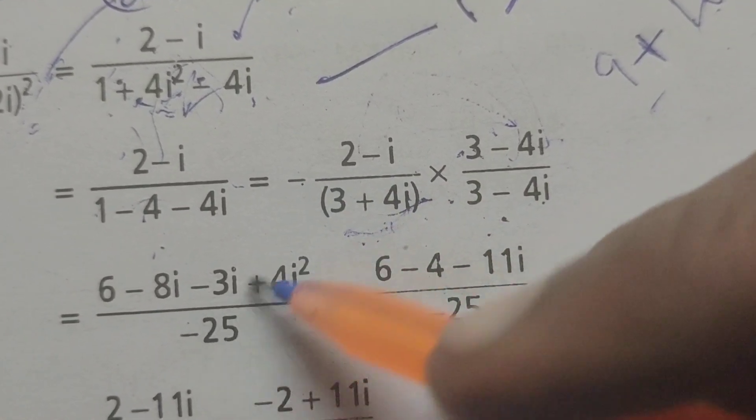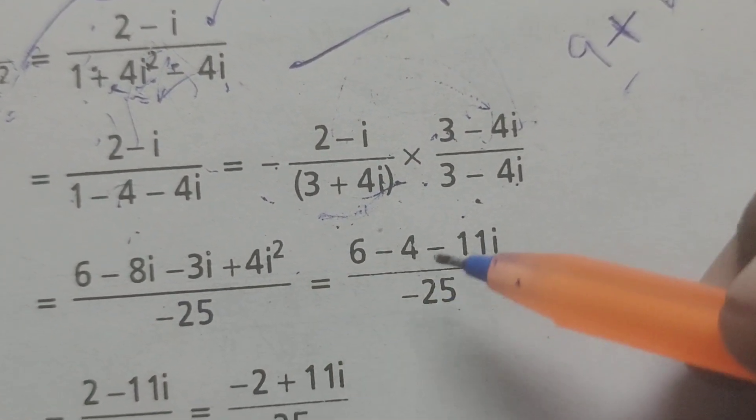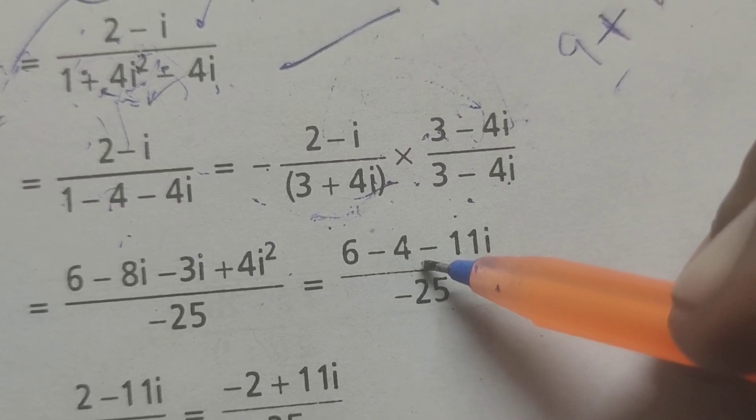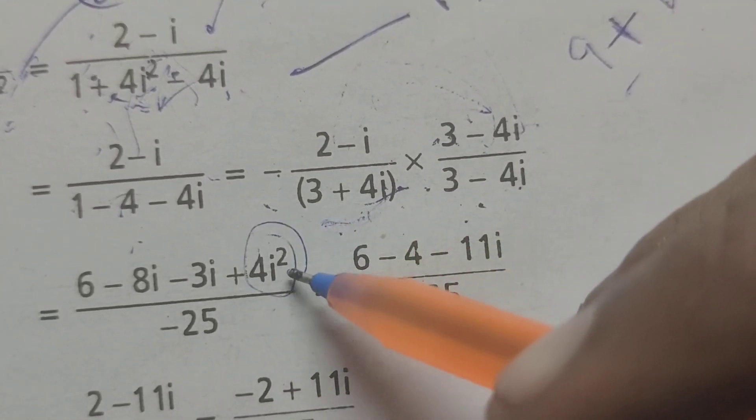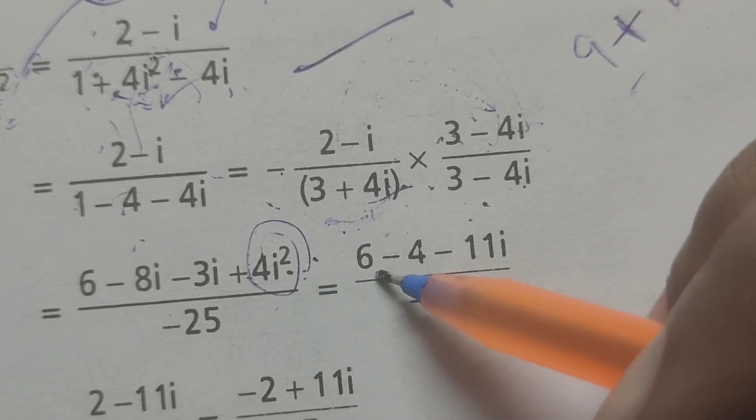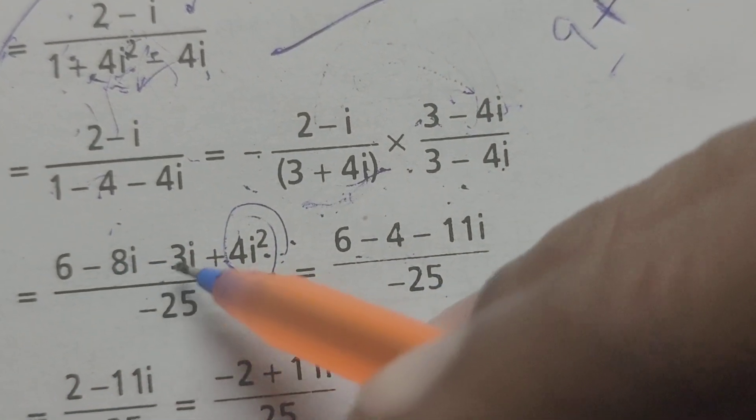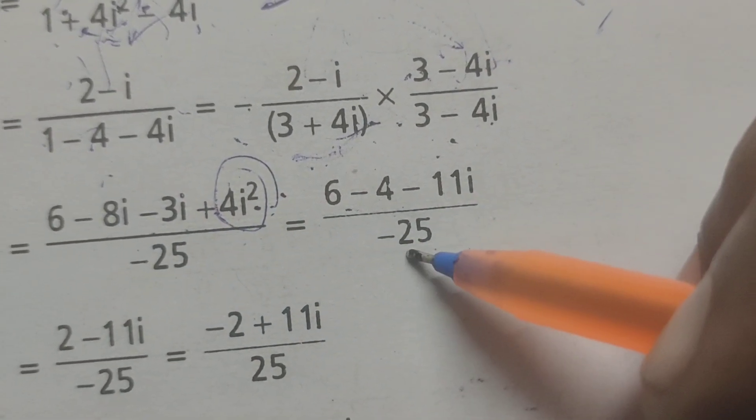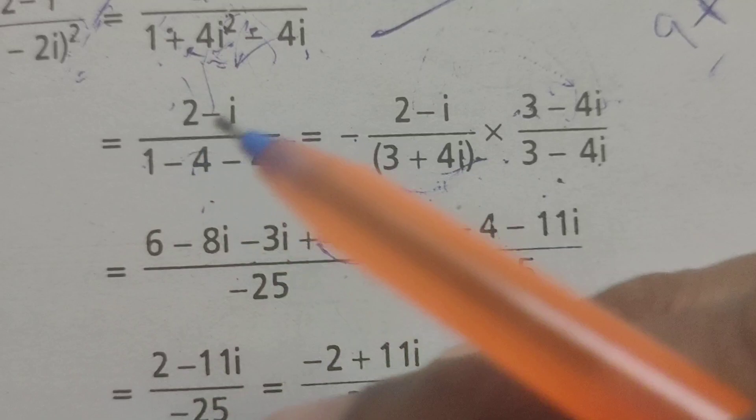There's a minus here, therefore -25. In the numerator: 6 - 4... i² means -1, therefore 6 - 4 - 8i - 3i = -11i. So (6-4-11i)/(-25), which equals (2-11i)/(-25).